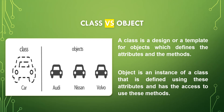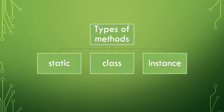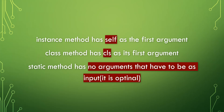Each object will have its own characteristics that distinguish it from others. Attributes and methods: the attribute is a variable stored in an instance or class, whereas a method is a function stored in an instance or class. We have three types of methods: static method, class method, and instance method. The static and class methods depend on the class itself, whereas the instance method depends on the object. Instance method has self as the first argument, class method has cls as its first argument, and static method has no required arguments.